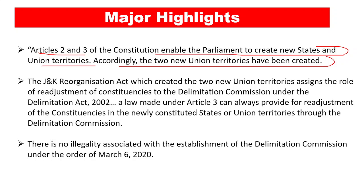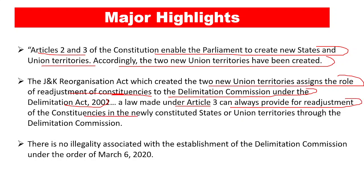The two new union territories are Jammu and Kashmir and Ladakh. The Jammu and Kashmir Reorganization Act, which created the two new union territories, assigns the role of readjustment of constituencies to the delimitation commission under the Delimitation Act of 2002. These union territories will require some readjustment so that people can get a fair chance to vote for their own legislators. This is done under the delimitation commission under the Delimitation Act of 2002, which is a law made under Article 3 and can always provide for readjustment of constituencies in newly constituted states or union territories.